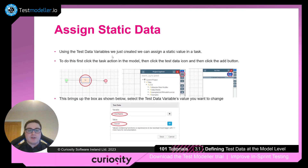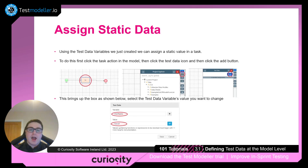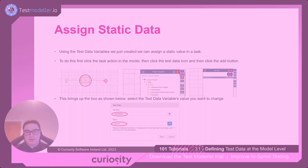We can use the test data variables we just created to assign a static value. Click the task, then click the data variable button to reveal the panel. Click the add button and a box will appear where you can enter the variable name and its value. As you go through the model, it will update your variable to that value.